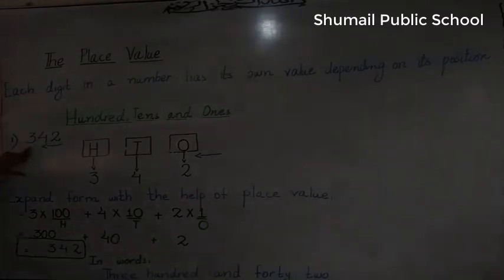Now, we have a number 3, 4, 2. Now I will ask you to tell me what is the place value of 4. We always start reading from the right hand side. Whether it is addition or subtraction, we have the rule that we have to start from the right hand side.